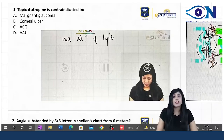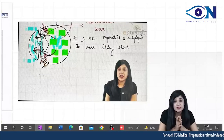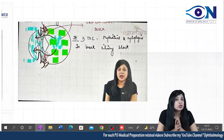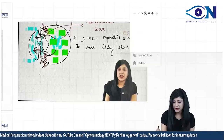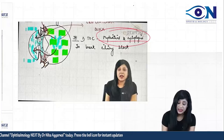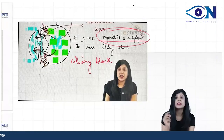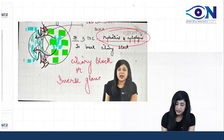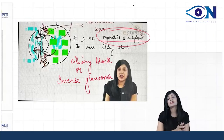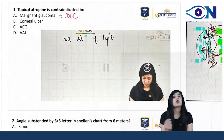In malignant glaucoma, the condition takes place due to misdirection of the ciliary processes, and we have to break the ciliolenticular block. That is why mydriatics and cycloplegics are the drug of choice there. Malignant glaucoma is also called ciliary block glaucoma or inverse glaucoma. Since atropine is a mydriatic and cycloplegic, it is the drug of choice in malignant glaucoma — so that is not the contraindication.